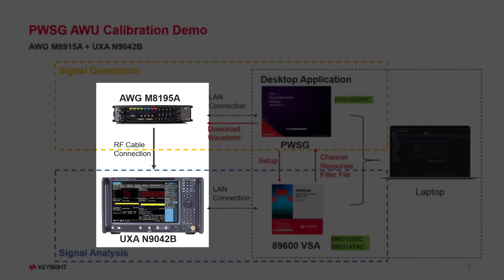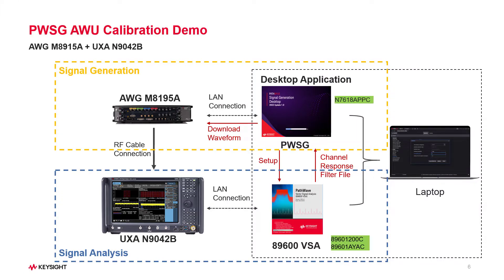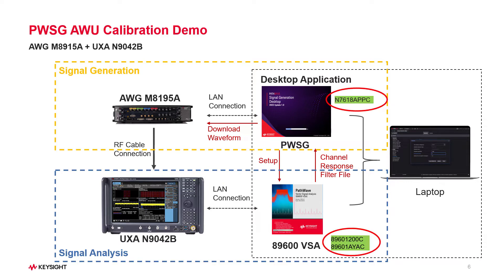First, the signal generator AWG is connected to the signal analyzer via RF cables. If you have a DUT, you can connect it between the instruments. Here for the demo purpose, I just connect them directly. Then on your PC, you can use PathWave Signal Generation Desktop Software to make a live LAN connection to the signal generator, and use VSA desktop software to make a LAN connection to the signal analyzer. In order to do closed-loop calibration, you may need valid licenses for both software. After successful configuration of the hardware connection and calibration settings, the waveform with channel correction filter files can be downloaded to the signal generator, as shown in the red arrow part here.